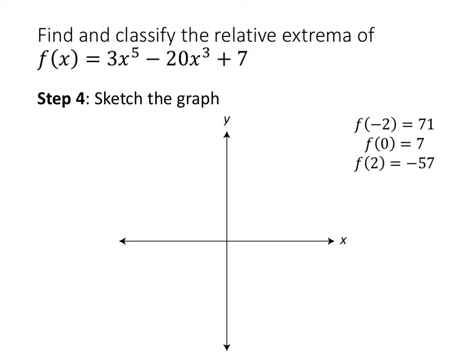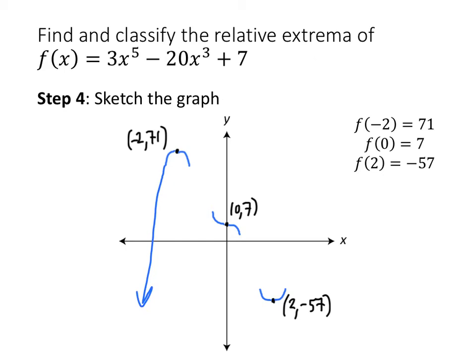Let's take everything we've learned and put it together into a picture. The interesting numbers are positive 2, negative 2, and 0, so we plug those into the original function to get the y-values and plot the points. At x equals negative 2 the function is concave down, giving a local maximum. At x equals positive 2 the function is concave up, giving a local minimum. At x equals 0 the function is decreasing on both sides, and it flattens out since the derivative equals zero there. Connecting the dots: to the left of negative 2 the function decreases forever, and to the right of positive 2 it increases forever. That gives us a rough sketch of what this function looks like.